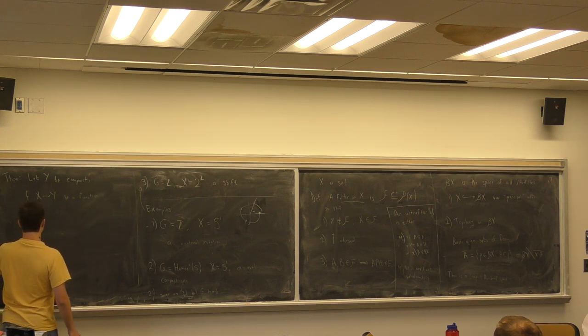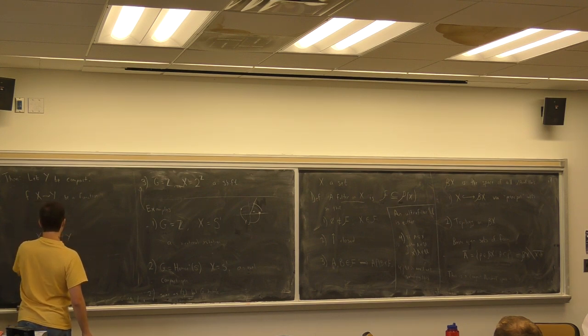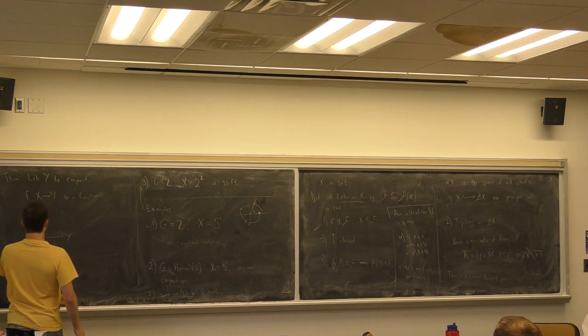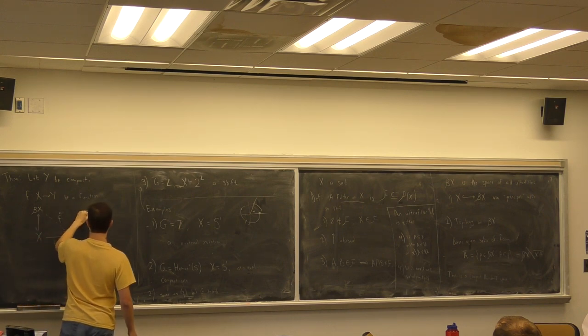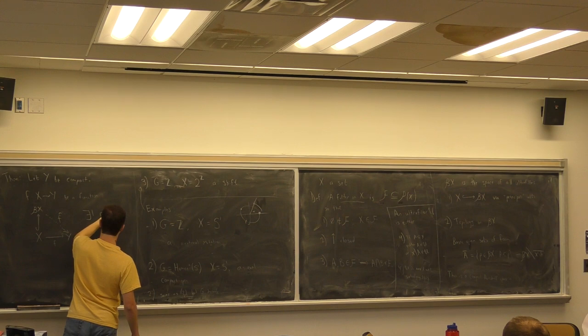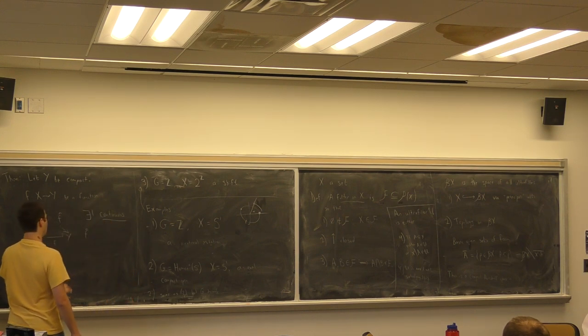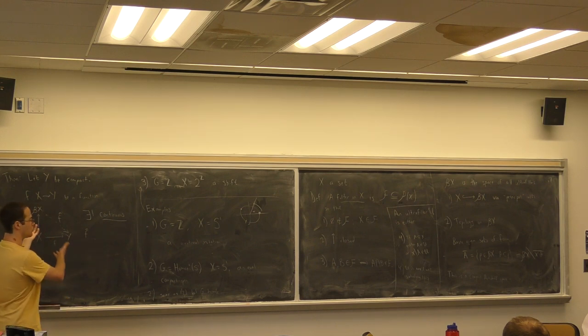So say that let y be compact Hausdorff. Everything is Hausdorff. And let f from x to y be any function. X is just a set, remember. So there's no, it's a discrete topological space if you think of it that way. So any function. So what are we gonna do? Here's x. Here's y. Here's f. Here's the inclusion. And then here is the last side of the magic triangle. So there is a unique continuous f hat making the triangle work.